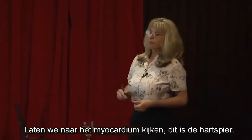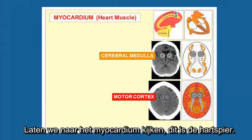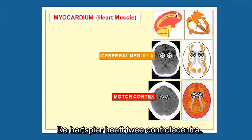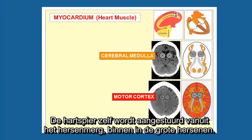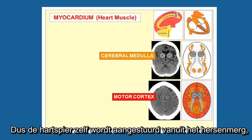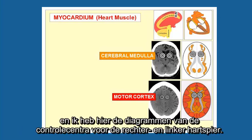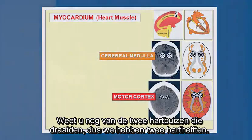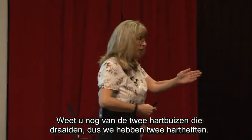The myocardium — that's the heart muscle — has two control centers. The heart muscle itself is controlled from the cerebral medulla, which is the interior part of the cerebrum. We have a control center for the right and for the left heart muscle. Remember, we had the twisting of the tube, so we do have two halves of the heart — one half controlled from one brain hemisphere, the other from the other.